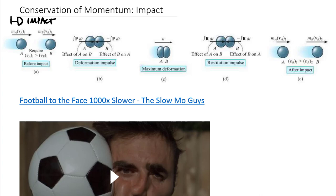We'll focus on impact for particles — assumed infinitesimally small — colliding in one or two dimensions. From Hibbeler Figure 15-14: two particles where A is moving faster than B and hits it. Each particle exerts a force over time on the other. There's a point of maximum deformation, then they push back. The deformation phase is the deformation impulse; the bounce-back phase is the restitution impulse.